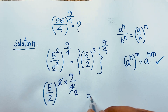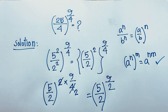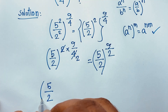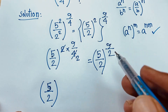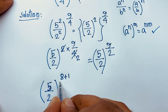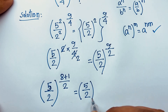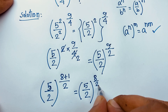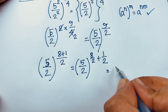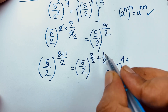We now simplify the exponent 9 over 2 by writing 9 as 8 plus 1, so 9 over 2 becomes 8 over 2 plus 1 over 2. Separating this, we get (5 over 2) to the power 4 plus 1 over 2, since 8 divided by 2 equals 4.